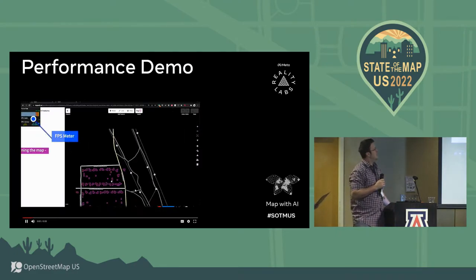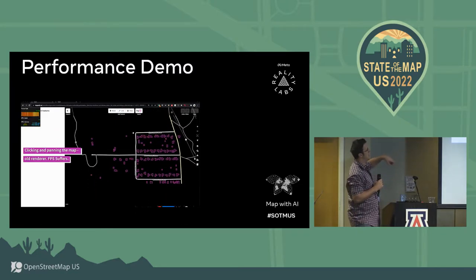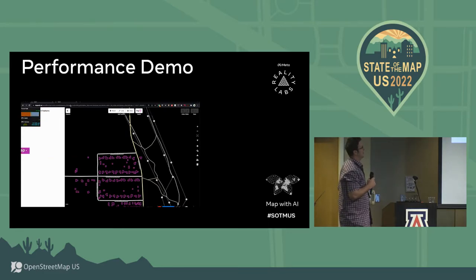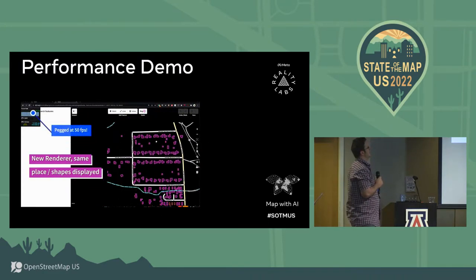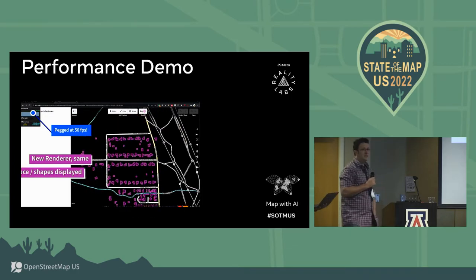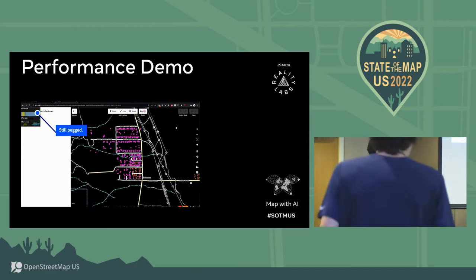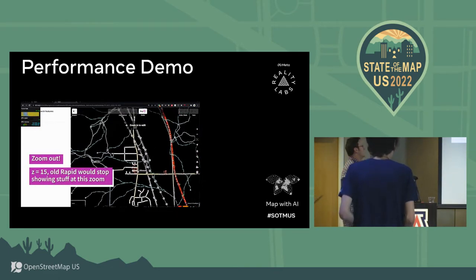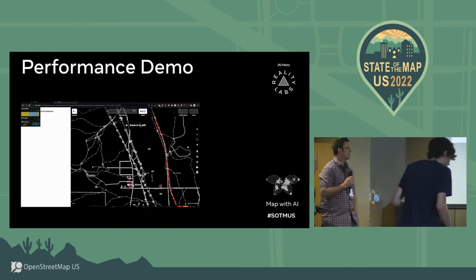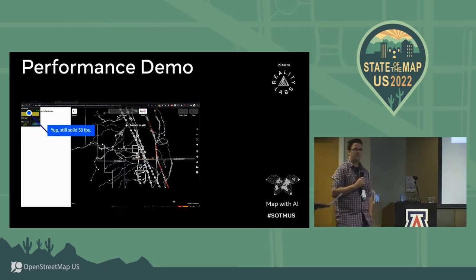This is the old ID renderer — me clicking and trying to pan the map around in a very small amount of data in a mining town in Colorado. You can see the frames per second suffers. What we've done is completely rewritten the Rapid renderer in WebGL, and it flies. This is a lot of work and it's still in process.